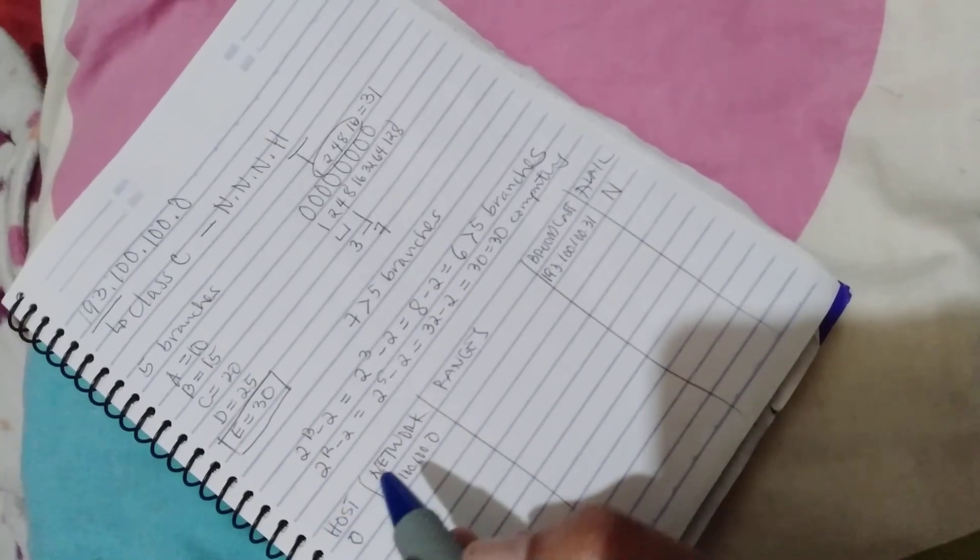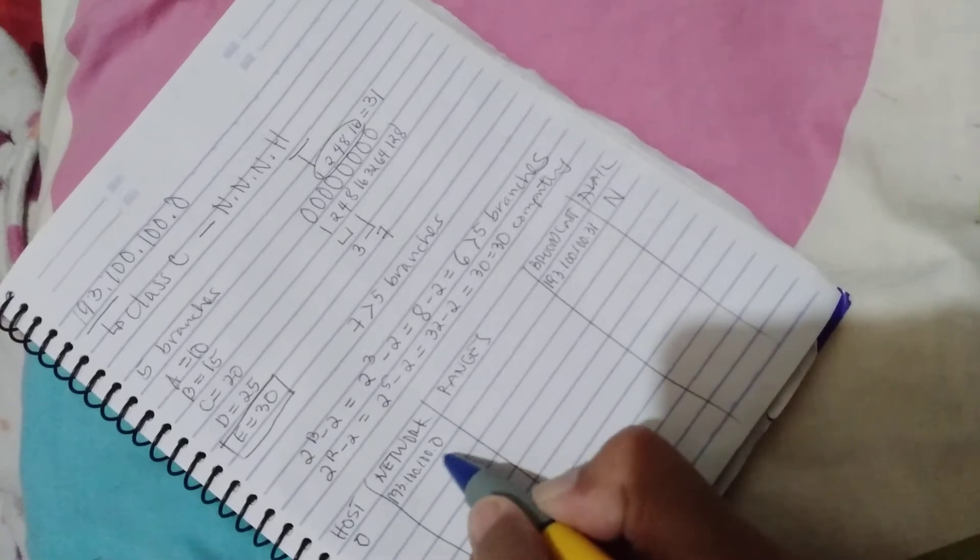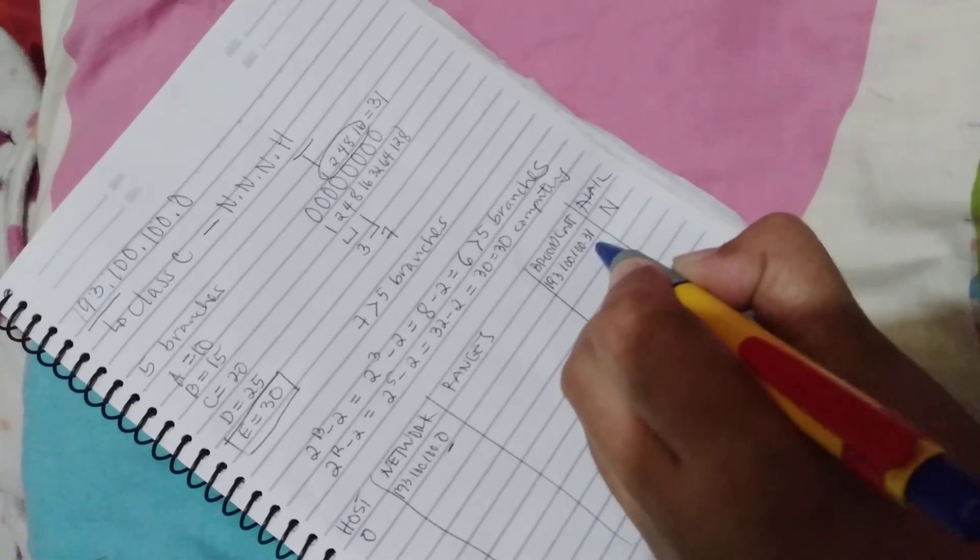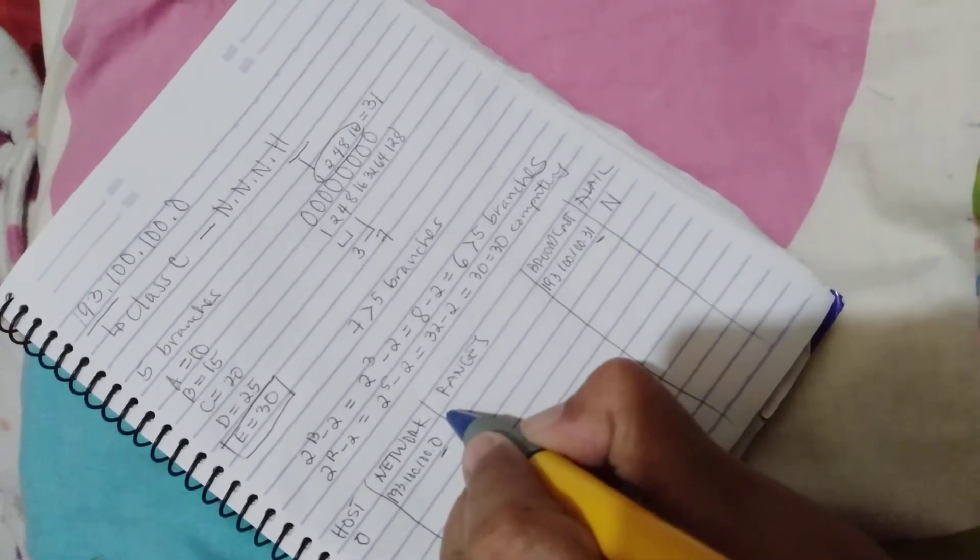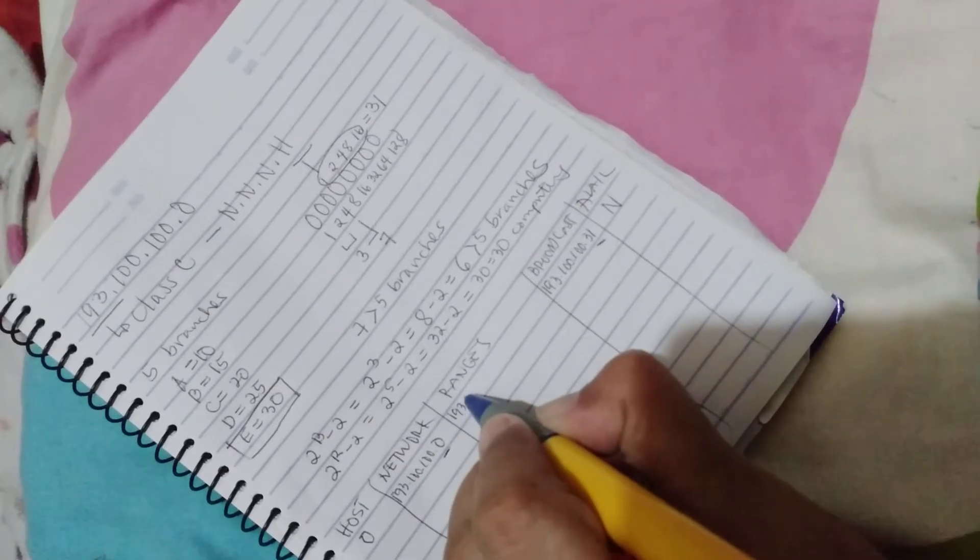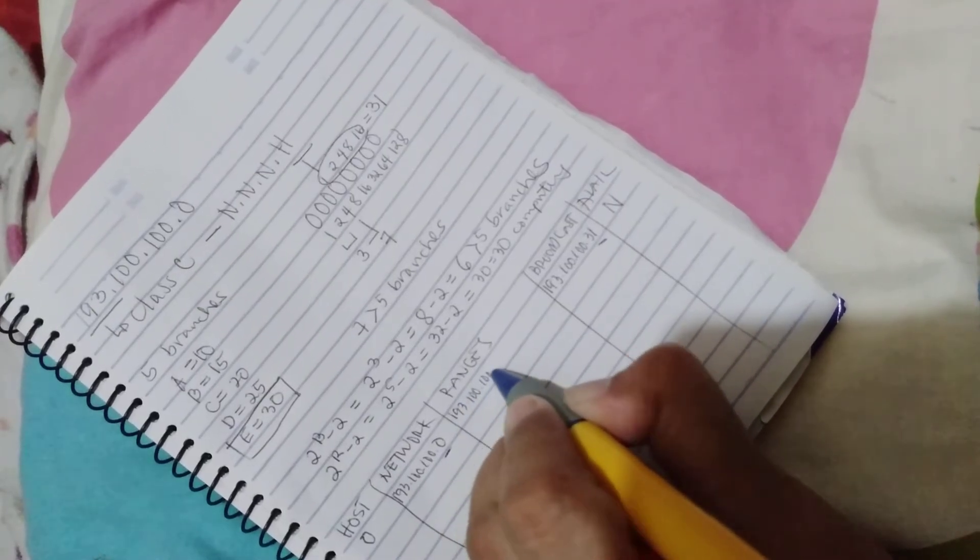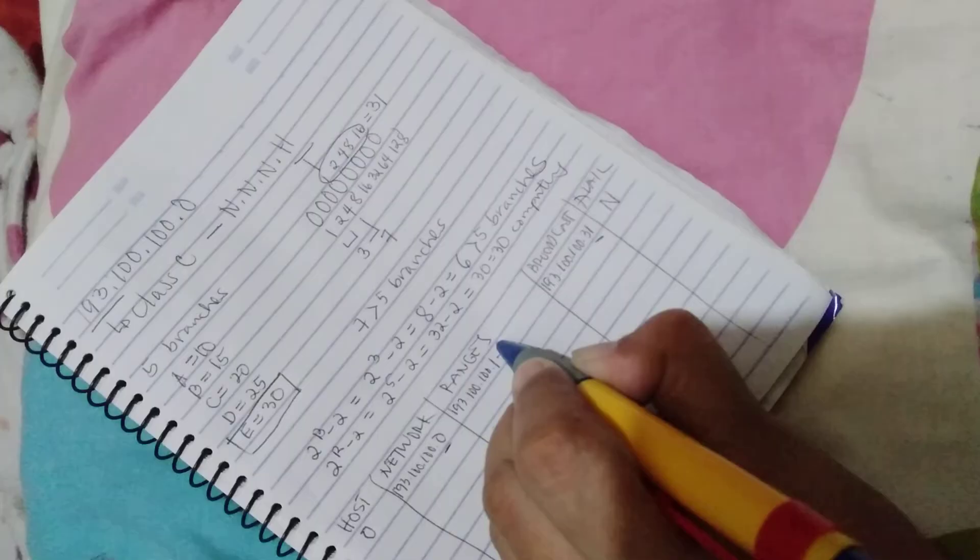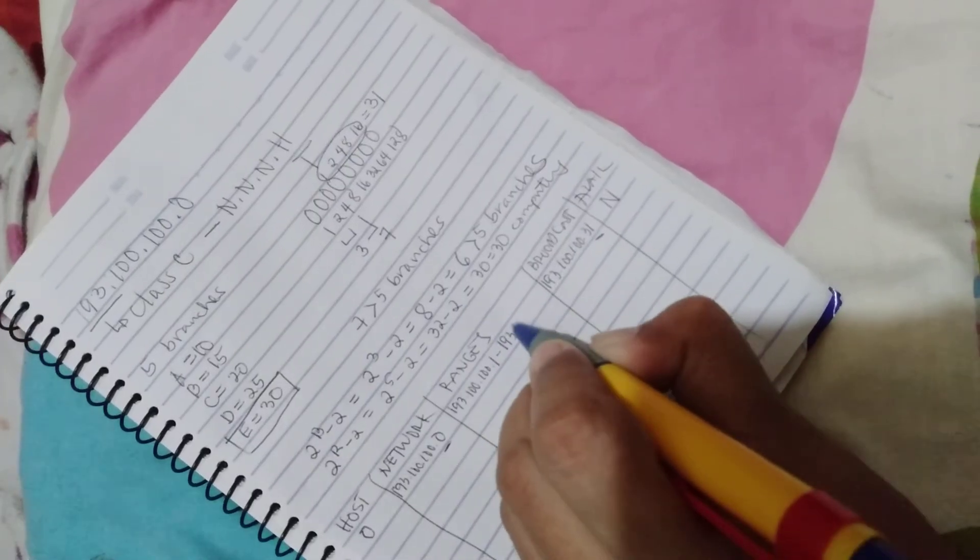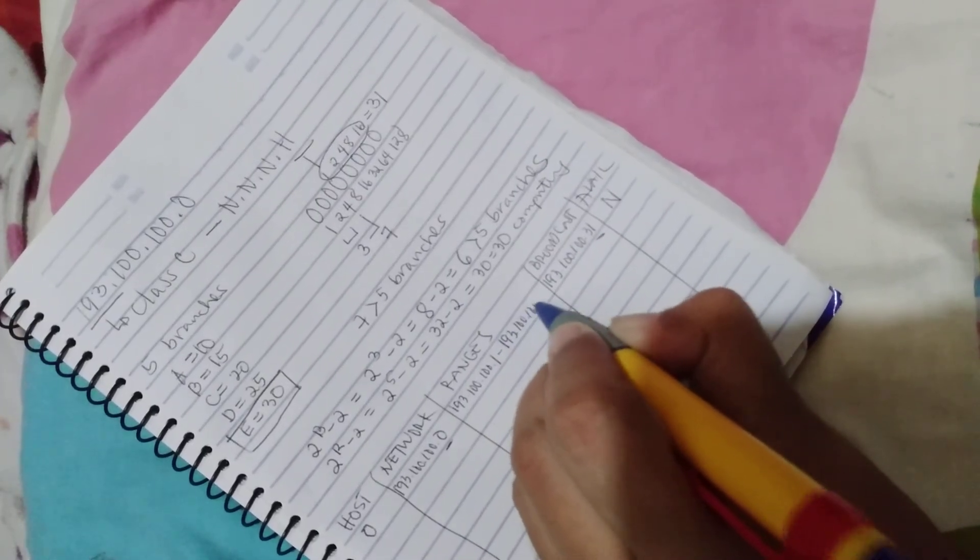Then the ranges: you will add plus 1 here and minus 1 here. So 193.100.100.1 up to 193.100.100.30, and it's not available for distribution.